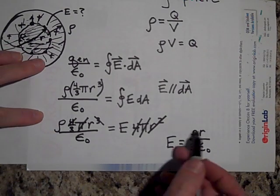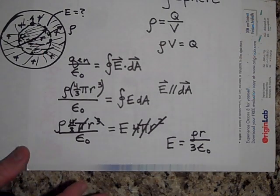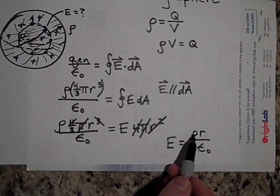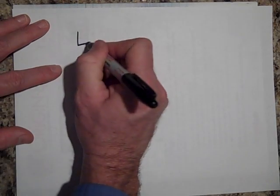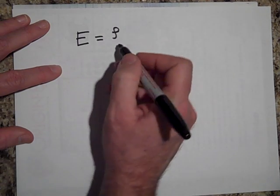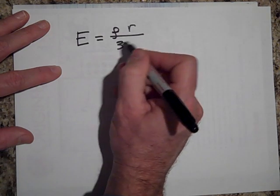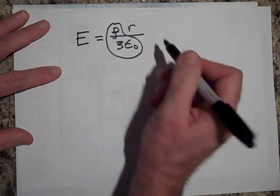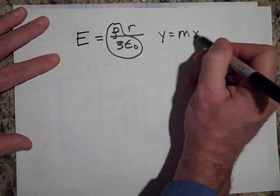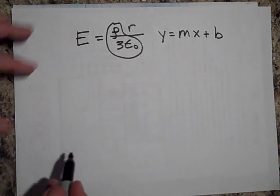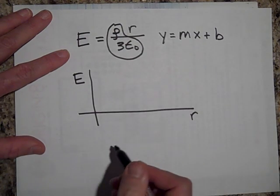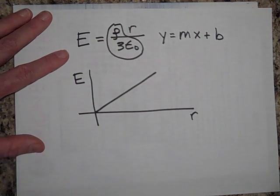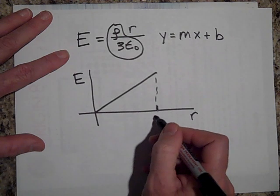If we graph this result, rho, three, and epsilon-naught are all constants, so E = ρr / 3ε₀ is like the equation y = mx + b with b equal to zero — a straight line through the origin. Plotting E versus r, the field increases linearly from zero up to the surface at capital R.